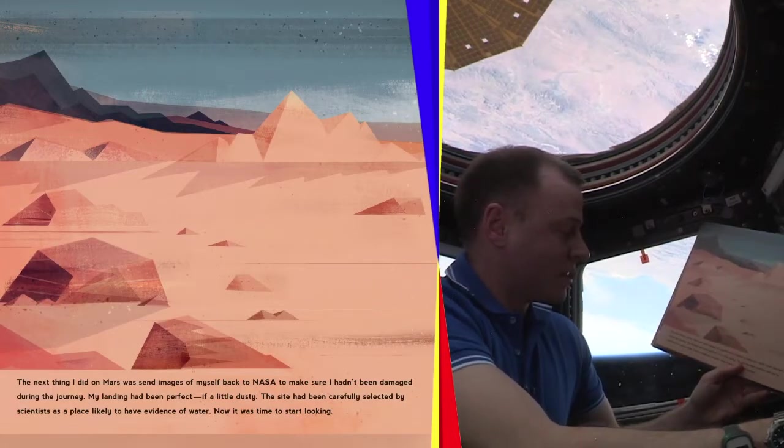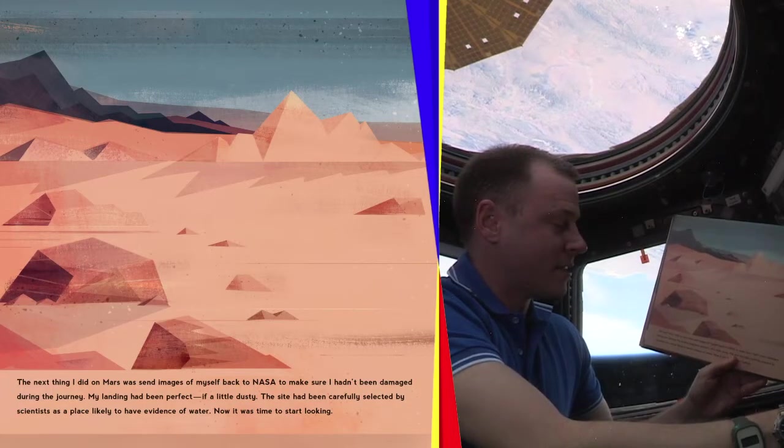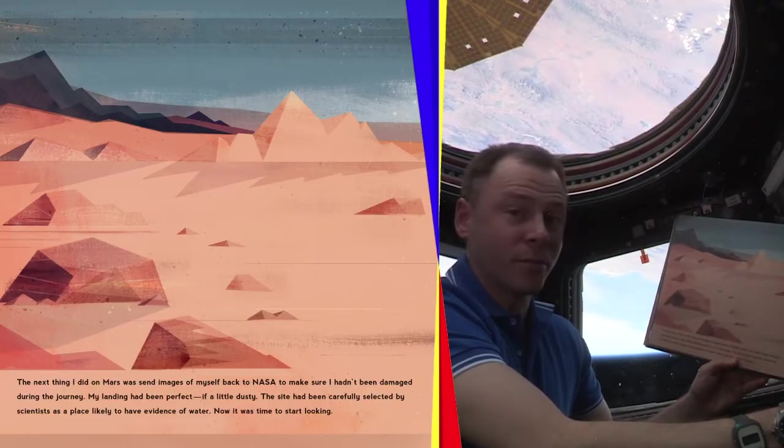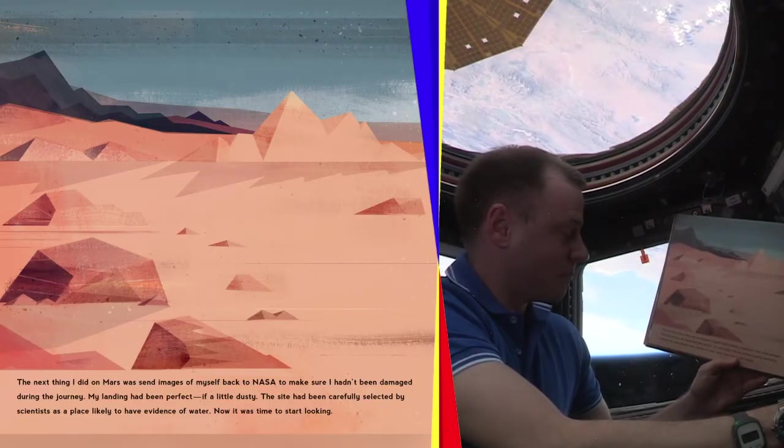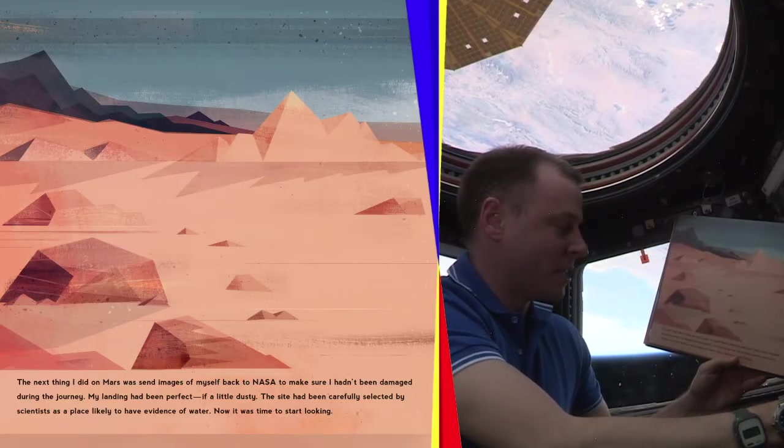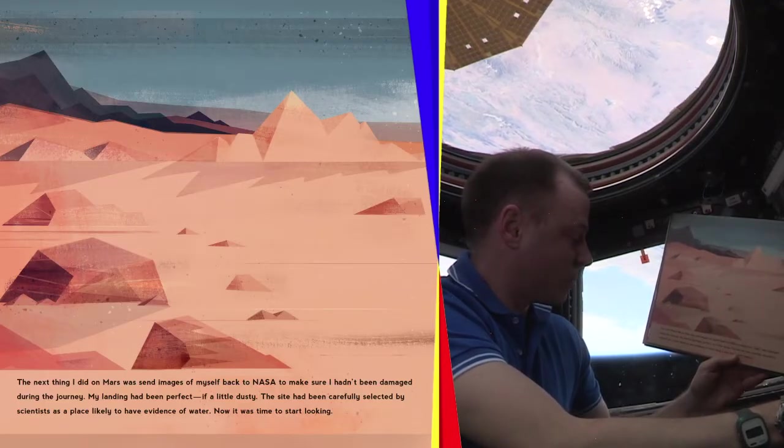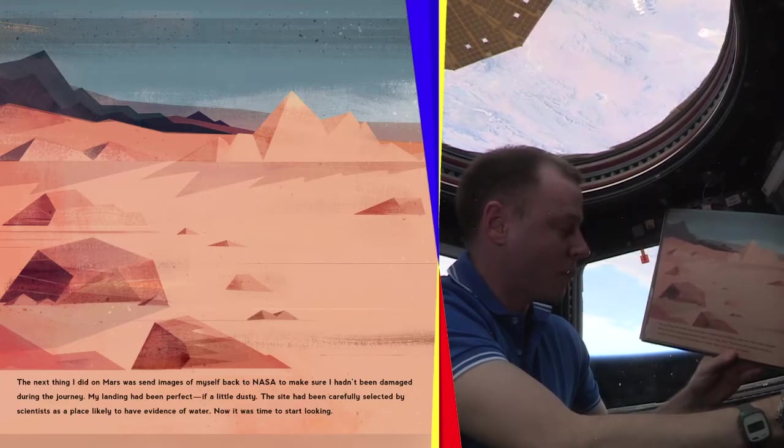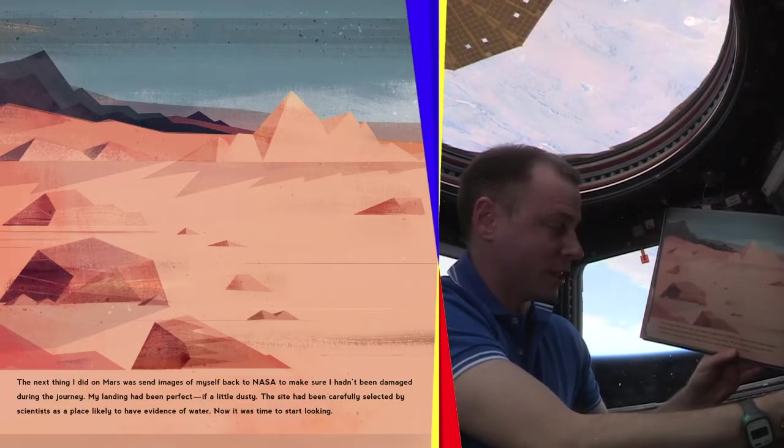The next thing I did on Mars was send images of myself back to NASA to make sure I hadn't been damaged during my journey. My landing had been perfect, if a little dusty. The site had been carefully selected by scientists as a place likely to have evidence of water. Now it was time to start looking.